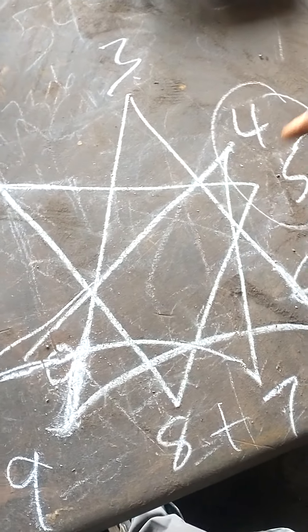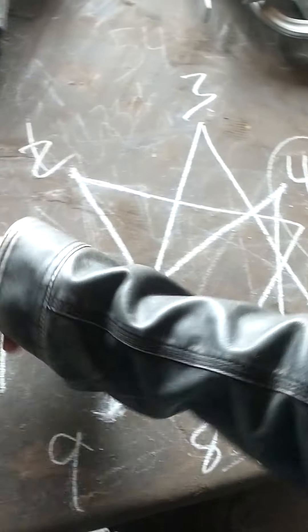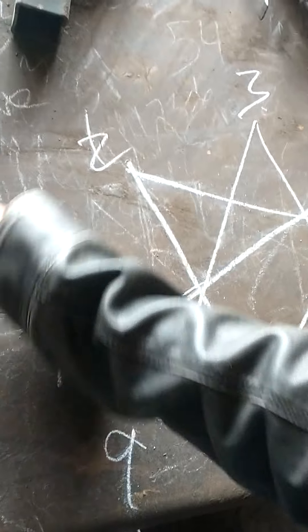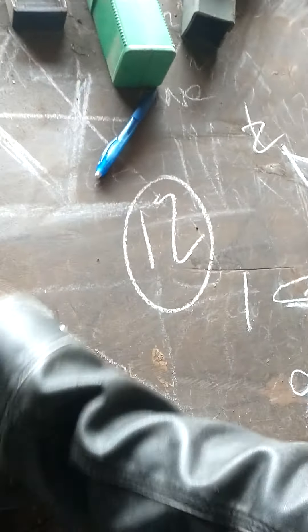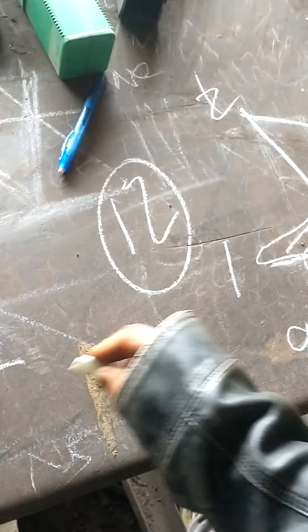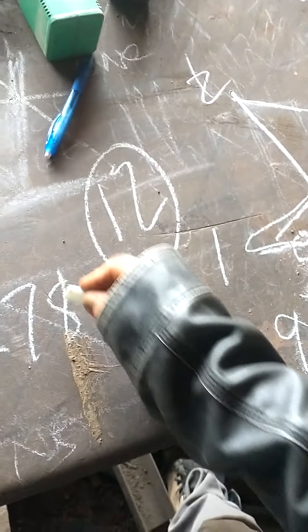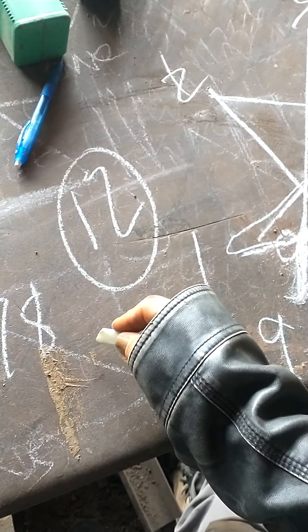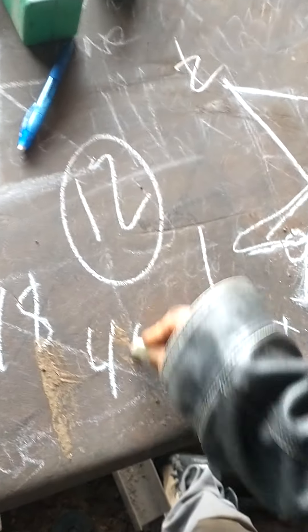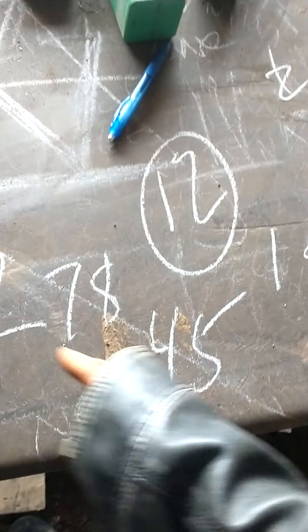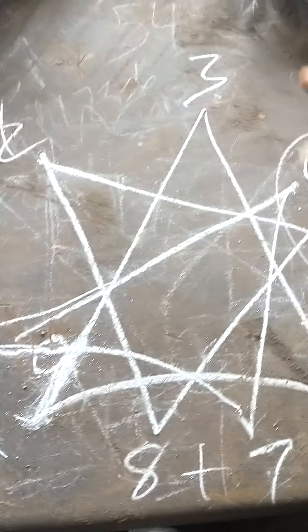So we have 7 and 8, 4 and 5, 1 and 2. So we get 12 — 7 and 8, and 4 and 5 in this equation.